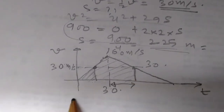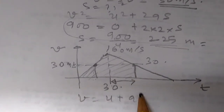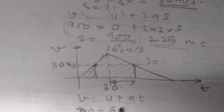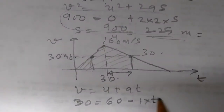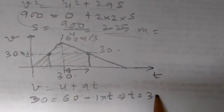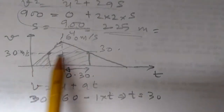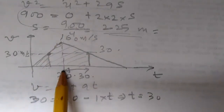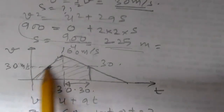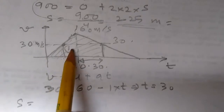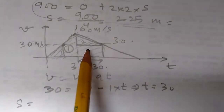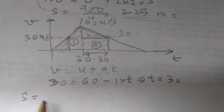Using v equals u plus at for the deceleration phase: 30 equals 60 plus minus 1 times t, so t equals 30 seconds. Now we need to find the total area under the graph up to this second position — the area of the acceleration phase plus the area under the deceleration curve up to that point.